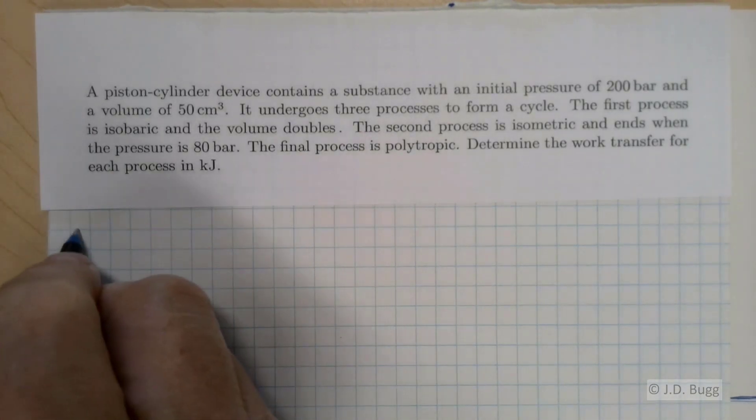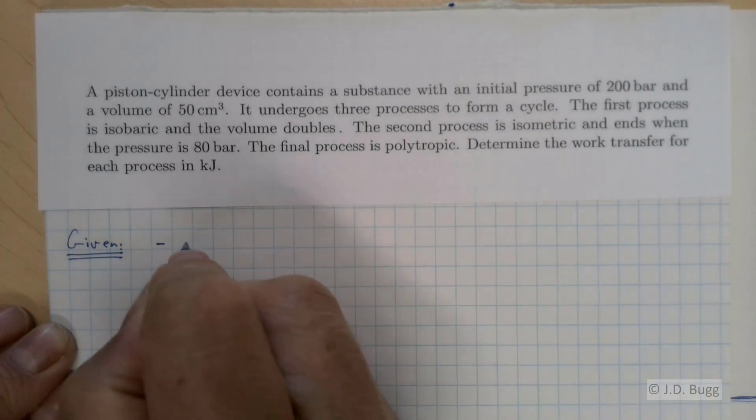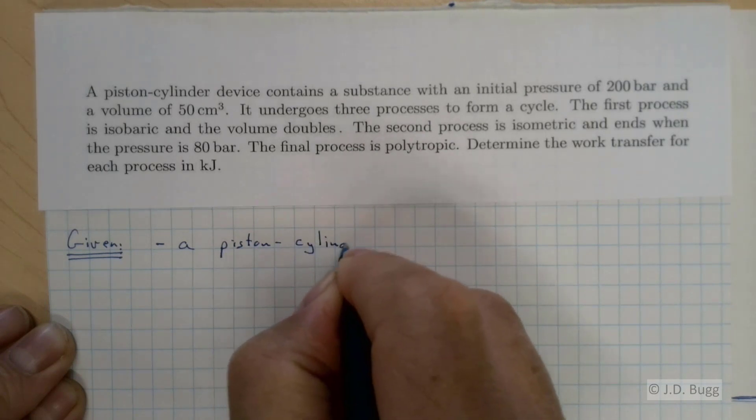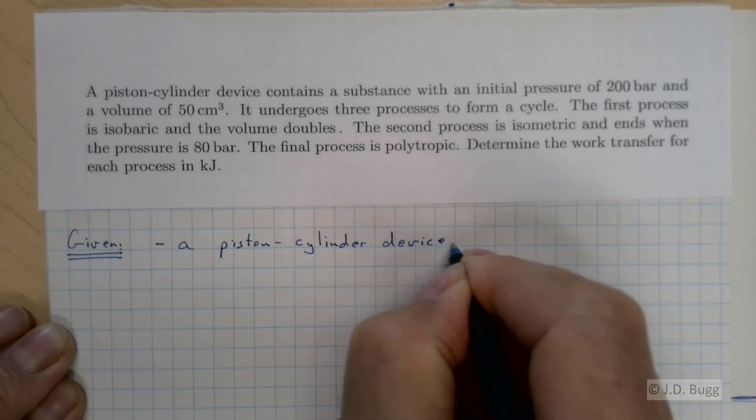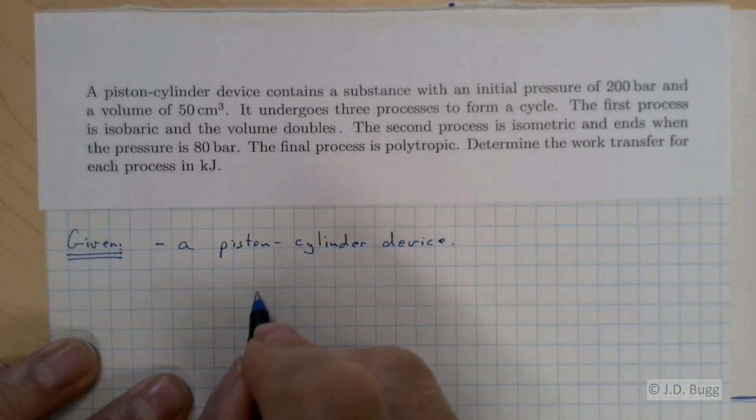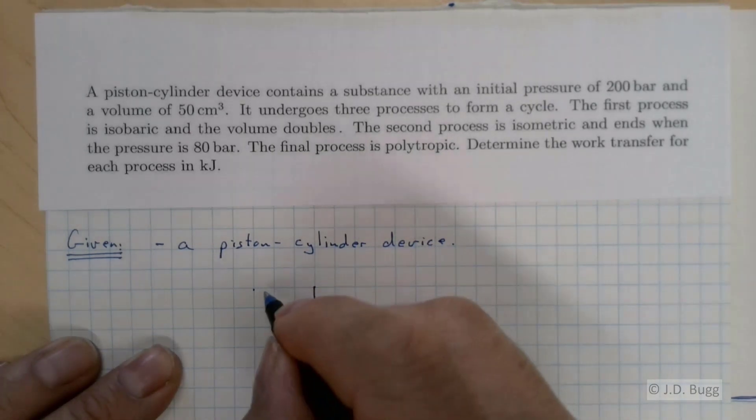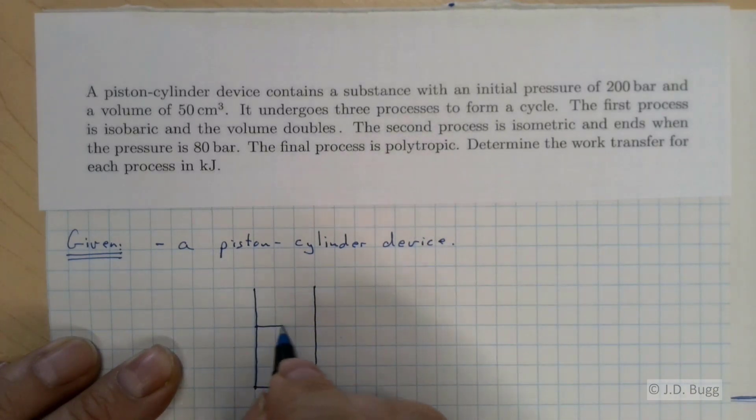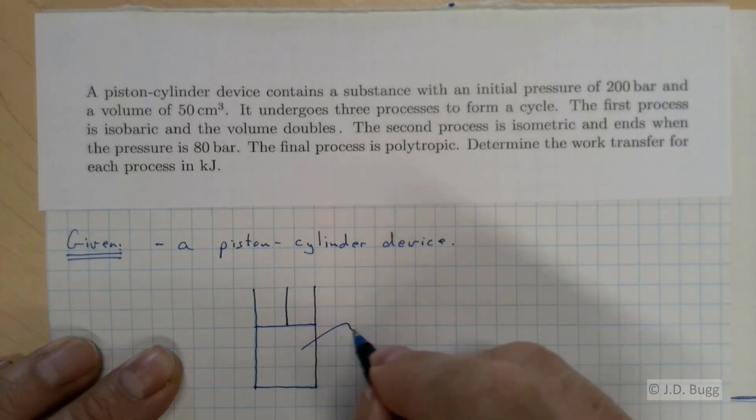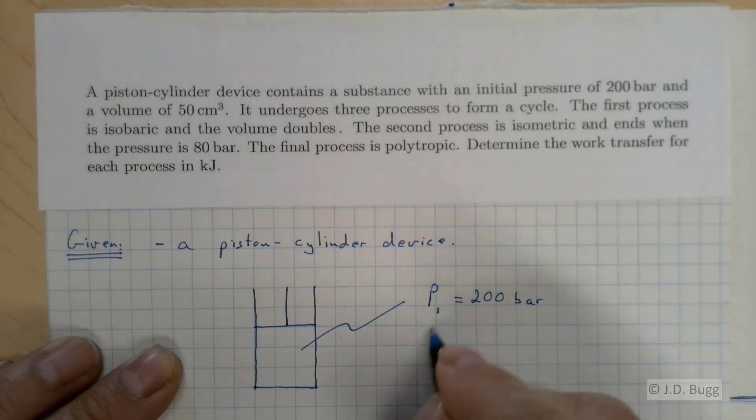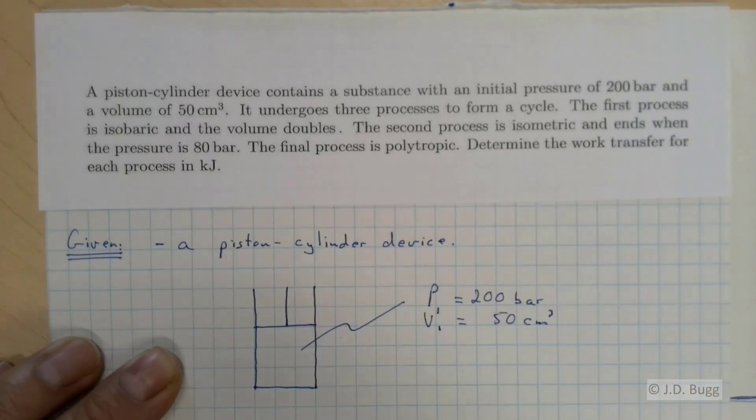So we'll begin with our given information. This is a piston-cylinder device. And we'll draw a little piston-cylinder device here. We note that the initial pressure, which we'll call P1, is 200 bar. And the initial volume is 50 centimeters cubed, both drawn from this first statement of the problem statement.